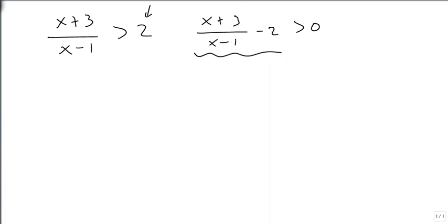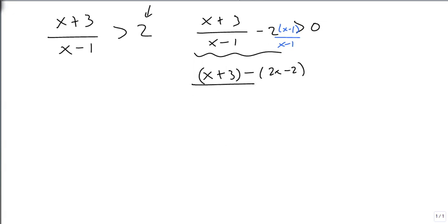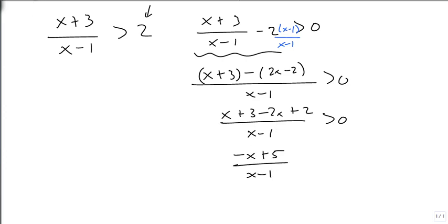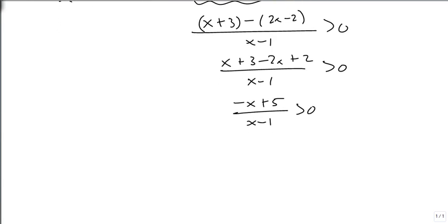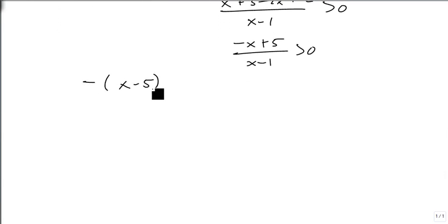But now I need to combine this to a single rational. So we need to multiply by x minus 1 over x minus 1 so our denominators are the same. And we get x plus 3 minus 2x minus 2 over x minus 1. Distribute to get x plus 3 minus 2x plus 2 over x minus 1. And this is still greater than 0. And when we combine like terms, we get minus x plus 5 over x minus 1 is greater than 0.